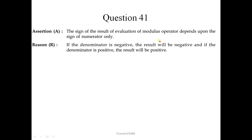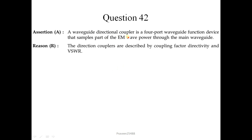Question number 41: The sign of the result of the modulus operator depends upon the sign of the numerator only — this is true. The reason states that if the denominator is negative the result will be negative, and if positive the result will be positive — this is incorrect. So the correct option is 3 (A is true but R is false). Question number 42: A waveguide directional coupler is a four-port waveguide junction device that samples part of the EM wave power. Directional couplers are described by coupling factor, directivity, and SWR — both are correct but the reason is not the correct explanation of the assertion, so option 2.